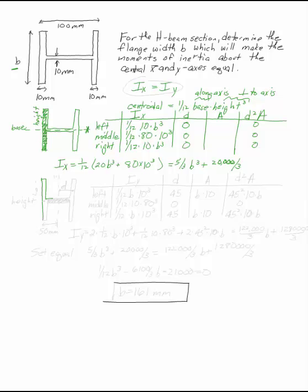The other thing we need to find is Iy. Looking at the same H-beam but about the y-axis running right through the middle vertically, each piece is still a rectangle. For the rectangle formula 1/12 times base times height cubed, now the base goes horizontally and the height is perpendicular to the y-axis. So the base is B and the height is 10 for the left piece, giving 1/12 times B times 10 cubed. The middle piece is 1/12 times 10 times 80 cubed. The right-hand piece is 1/12 times B times 10 cubed.